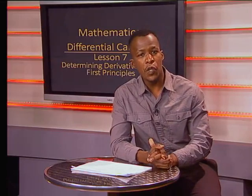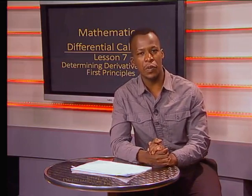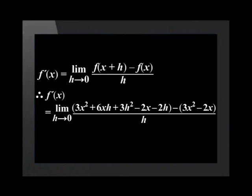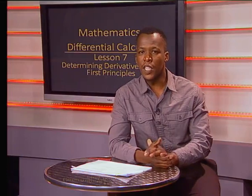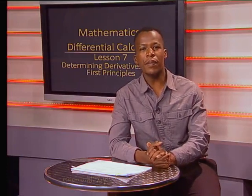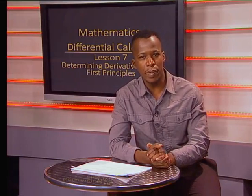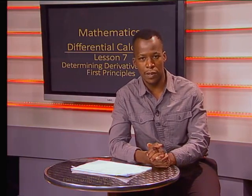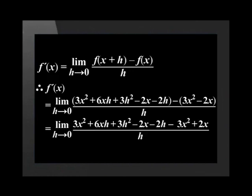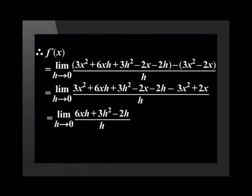This equals 3x squared plus 6xh plus 3h squared minus 2x minus 2h. Now that we found the value of f of x and f of x plus h, we can substitute them in. The formula will read f dash of x is equal to the limit as h tends to 0 of 3x squared plus 6xh plus 3h squared minus 2x minus 2h minus open bracket 3x squared minus 2x close bracket over h. Next, we need to multiply out the brackets. Remember that the minus on the outside of the brackets needs to be multiplied by the terms on the inside of the brackets. Next, we need to add the like terms in the numerator. This will leave us with 6xh plus 3h squared minus 2h in the numerator.